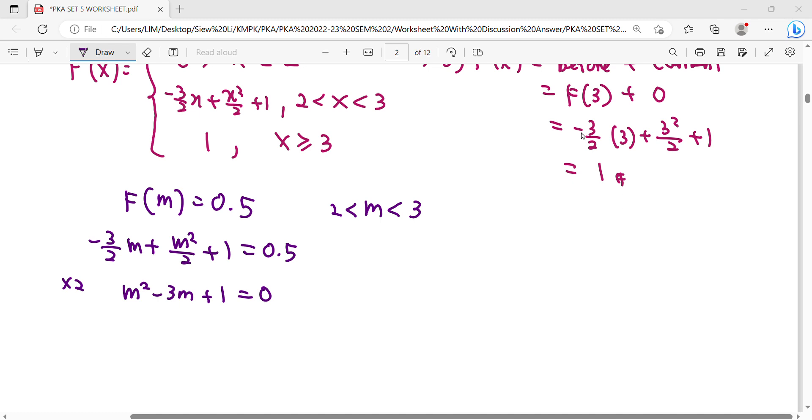You don't perform the factorized method. Other than factorization, you can using formula. Negative B plus minus B squared minus 4 A C. So that will be more accurate to show us how you get your roots. Bukan dengan factorize. Sebab kita punya roots, kita punya quadratic solutions ini adalah decimal. Tak mungkin kita boleh factorize.